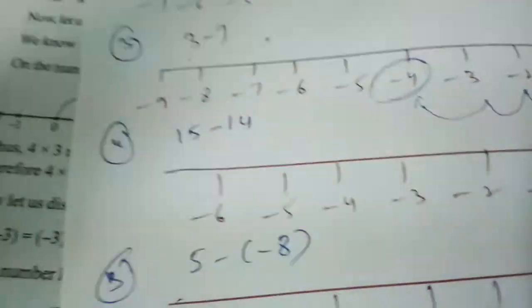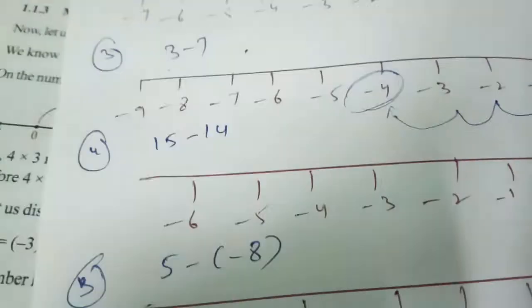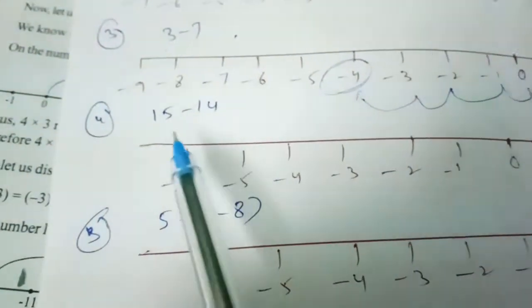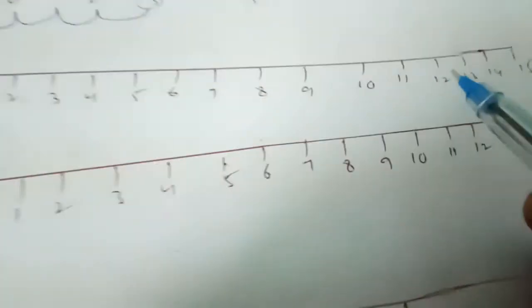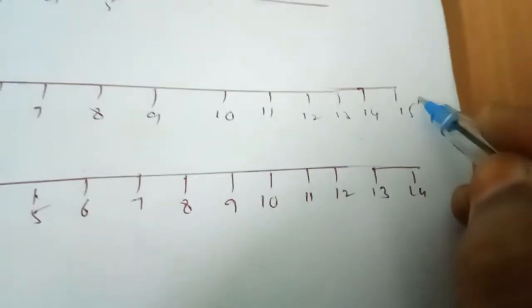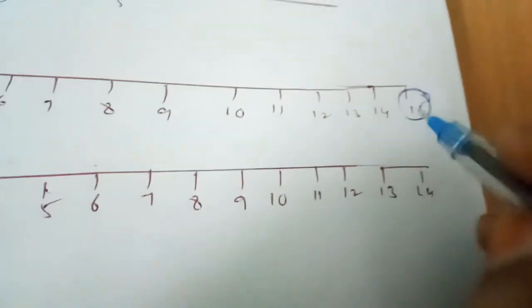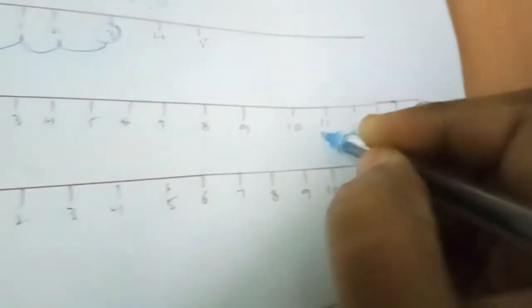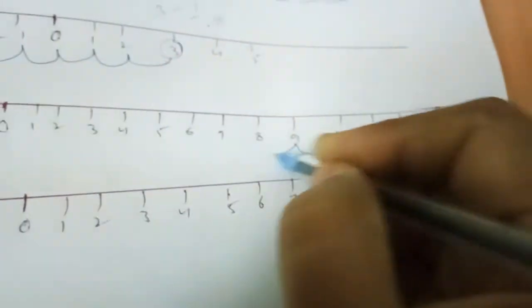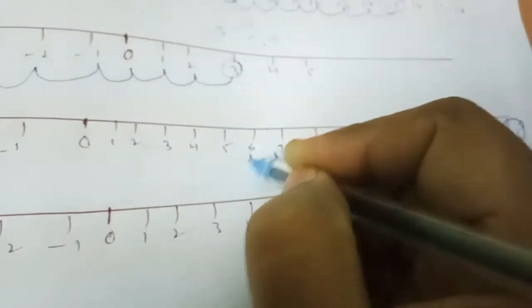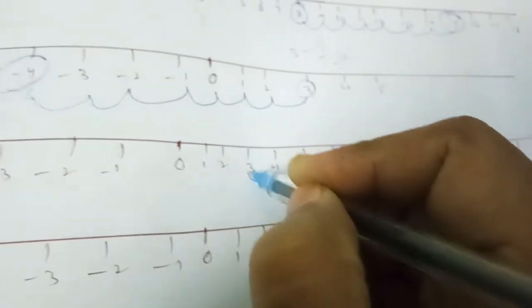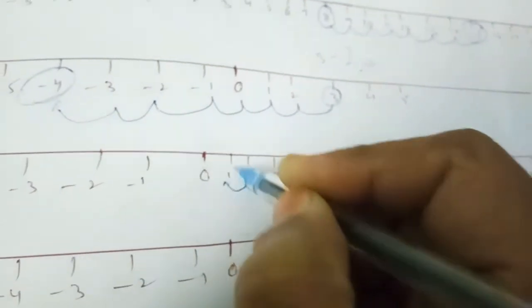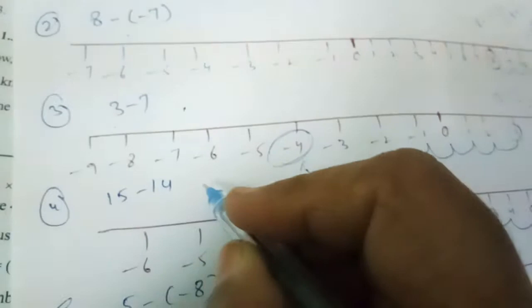Next one is 15 minus 14. Where is positive 15? Here it is. We have to move 14 times to the left: 1, 2, 3, 4, 5, 6, 7, 8, 9, 10, 11, 12, 13, 14. So 1 is our answer.